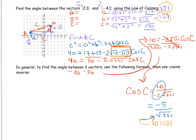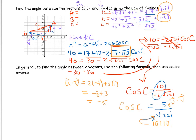And what about that negative 5? That negative 5 is just the dot product of U and V. Let's verify: U dot V equals 2 times negative 4 plus 3 times 1, which is negative 8 plus 3, which is negative 5. So putting it all together, cosine of C equals negative 5, which is U dot V, divided by root 221, which is the magnitude of U times the magnitude of V.